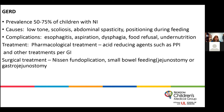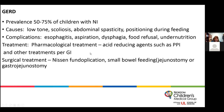GERD prevalence is about 50 to 75 percent in children with neurological impairment, due to low tone, scoliosis, spasticity, or positioning. Complications include esophagitis, aspiration, dysphagia, and undernutrition. Treatments include pharmacological acid-reducing agents such as PPIs as first-line therapy, other gastroenterology interventions, and surgical options such as a Nissen fundoplication, small bowel feeding, or gastrojejunostomy.